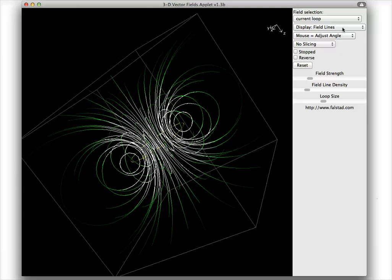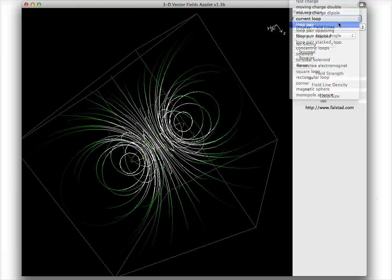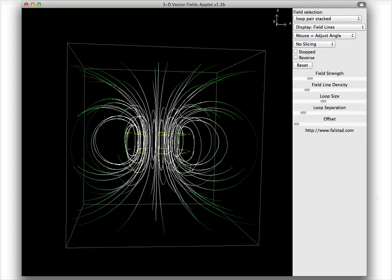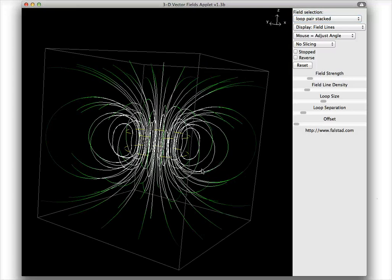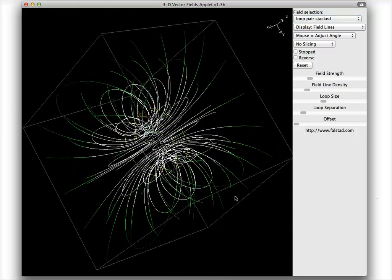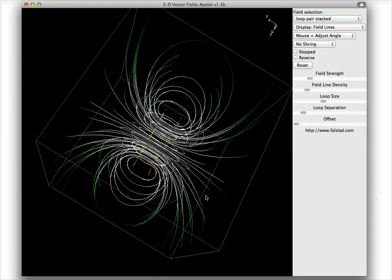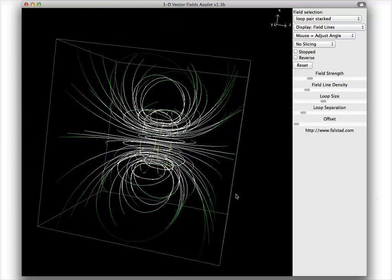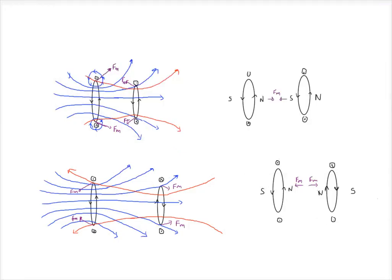You can see them curving away there. And here's just two current loops stacked on top of each other like a baby solenoid, and again you can just see that the field lines are curved as they come out.